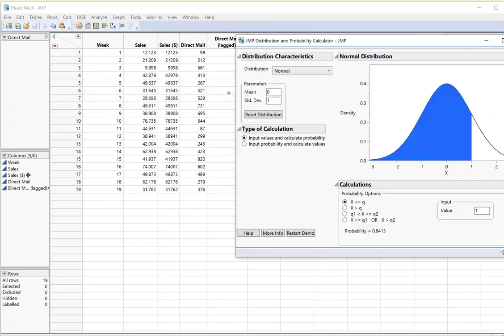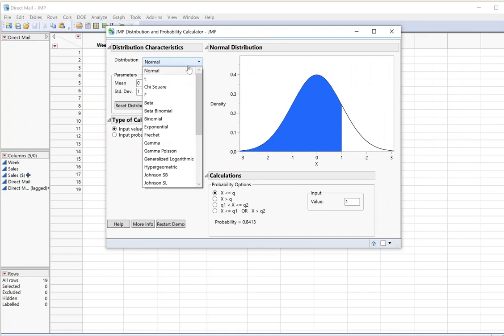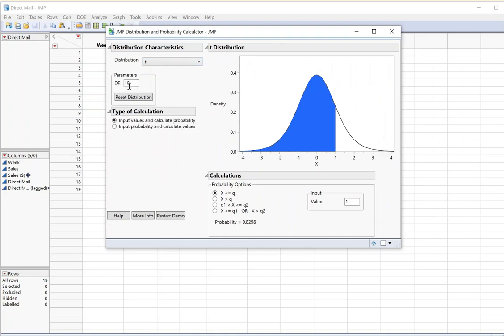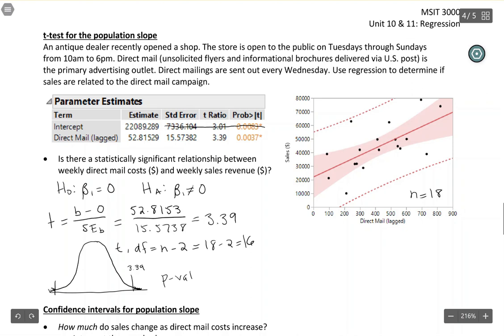So I'm going to add-ins, teaching modules, distribution calculator. And I need a t-distribution. This is a quantitative response. So I'm picking t. My degrees of freedom was n minus 2. That was 16. I'm going to put in my t-statistic, 3.39. And I want this to be a two-sided test. So I'm choosing the option down here at the bottom. I've got value one and value two. Value one should be the negative one. Okay. And that's where I get my p-value, 0.0037. So where it says probability equals, that's the p-value.